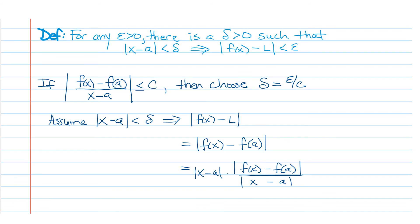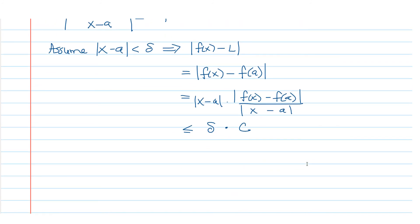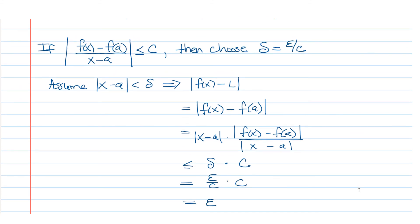And again, the reason why that's helpful is because we know this quantity is bounded by C. We also know that this quantity was assumed to be less than delta. So that means that this whole expression is less than or equal to delta times C. But since we chose delta to be equal to epsilon over C, that means that we can replace delta with epsilon over C and we just get epsilon. So we have proven that f of X minus L would have to be less than epsilon.